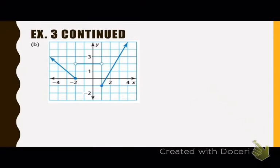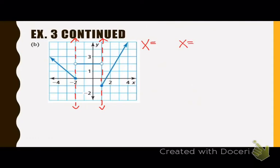That brings us to letter B. How many pieces do you see in this graph? Three. So how many boundary lines do you see? Two. Step number one is to find the boundary lines. Find where one graph stops and the other graph starts, and draw a boundary line right through those two endpoints. The first boundary line crosses the x-axis at negative two, so it's x equals negative two. The second boundary line crosses the x-axis at one, so it's x equals one.